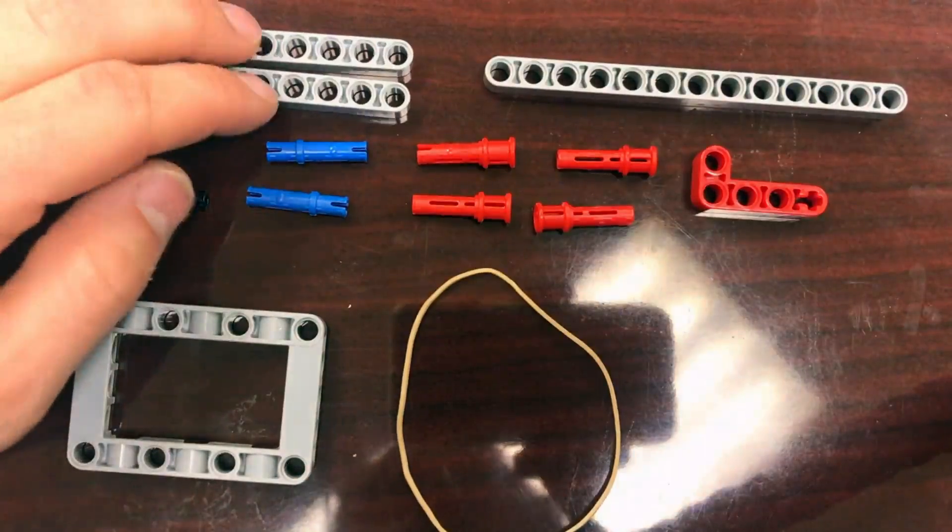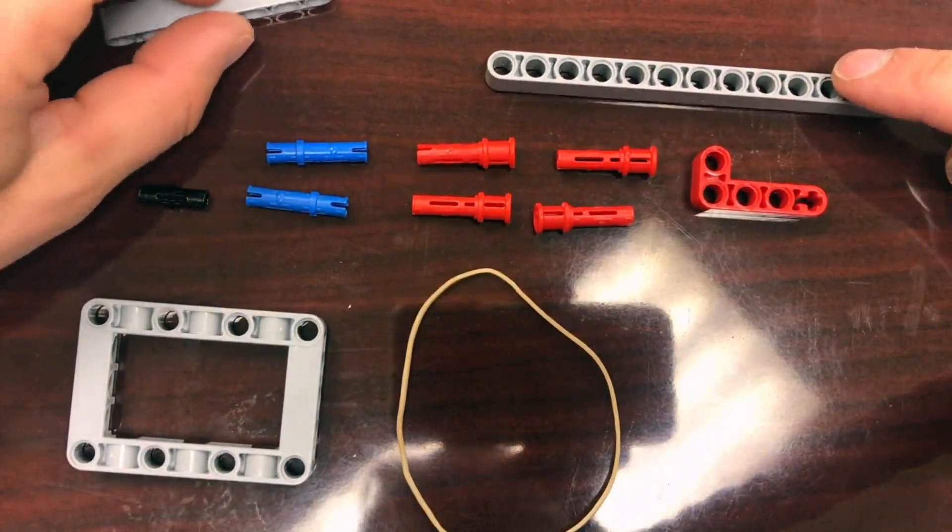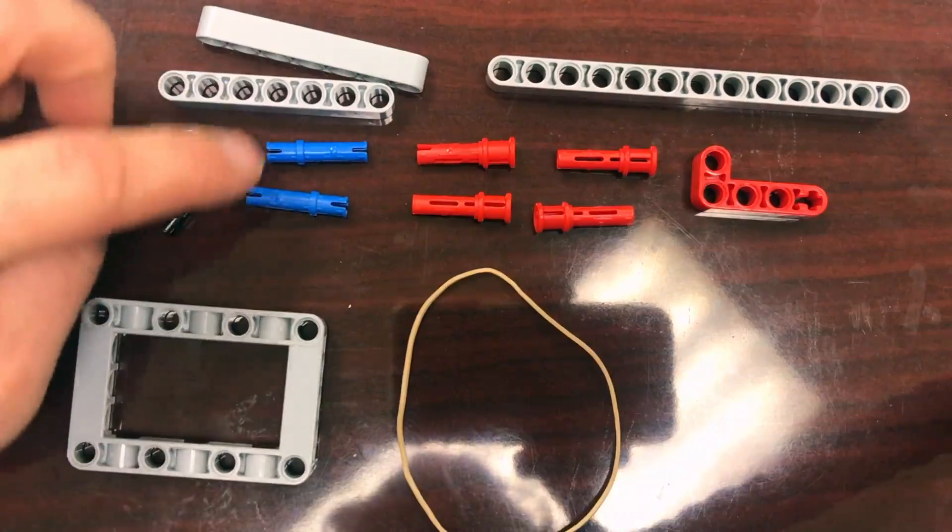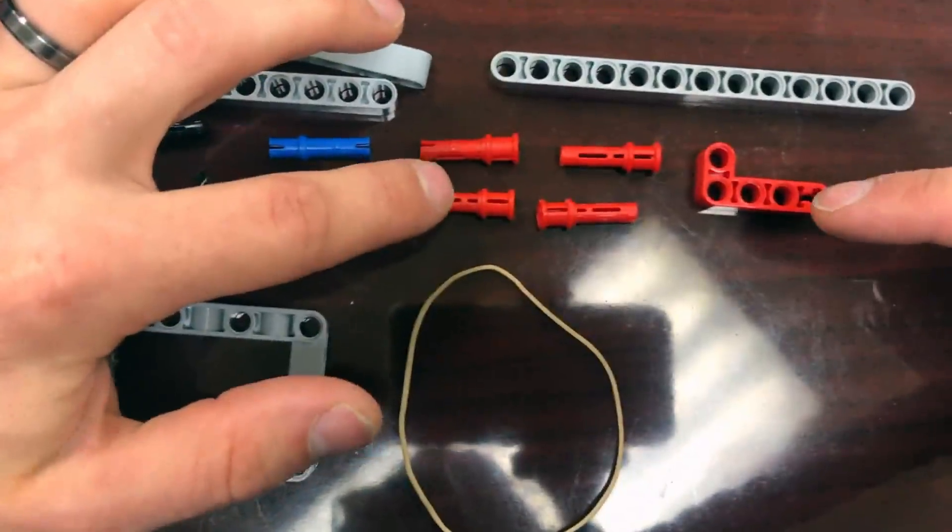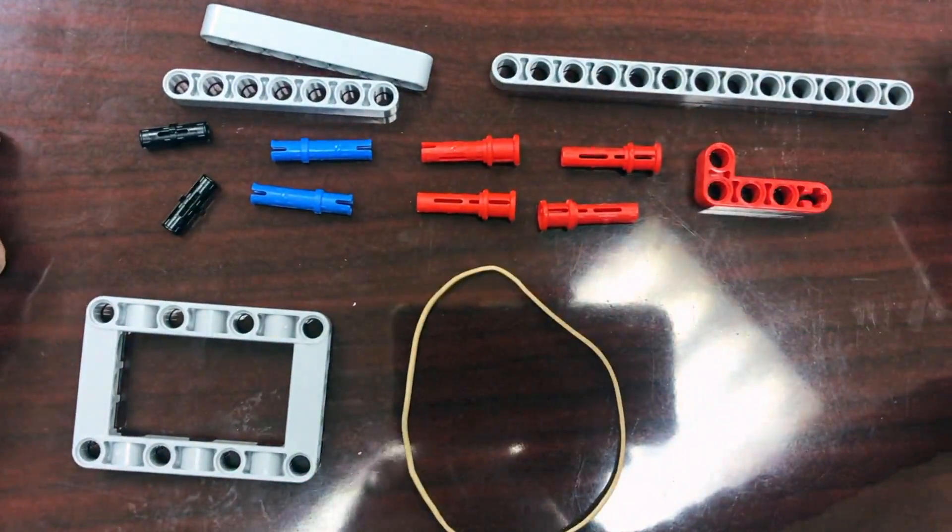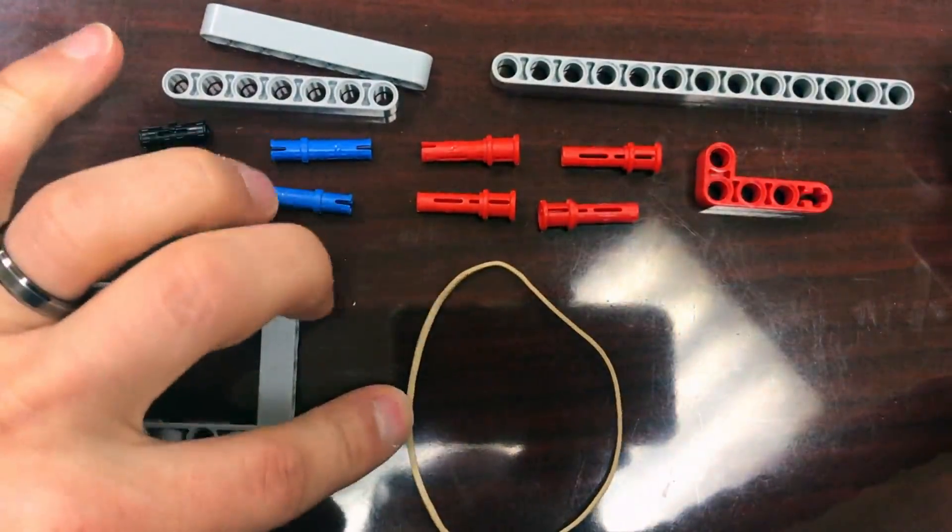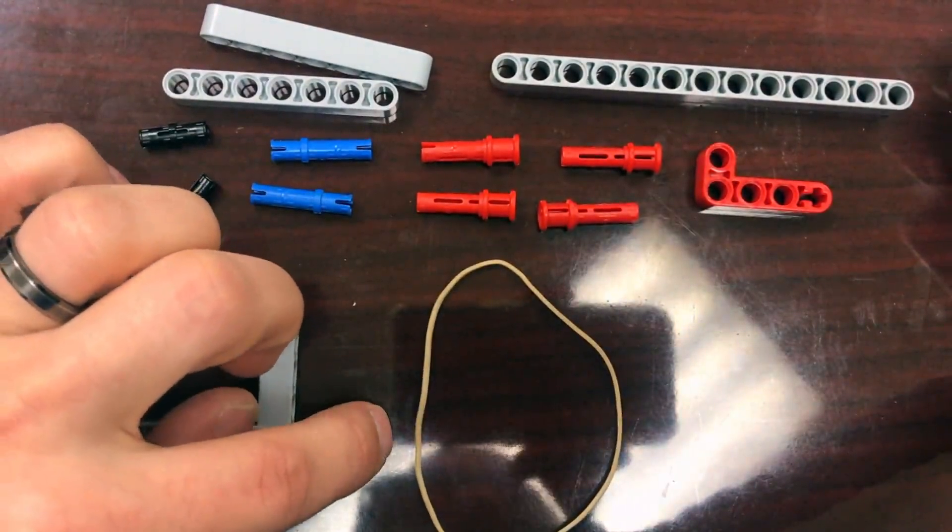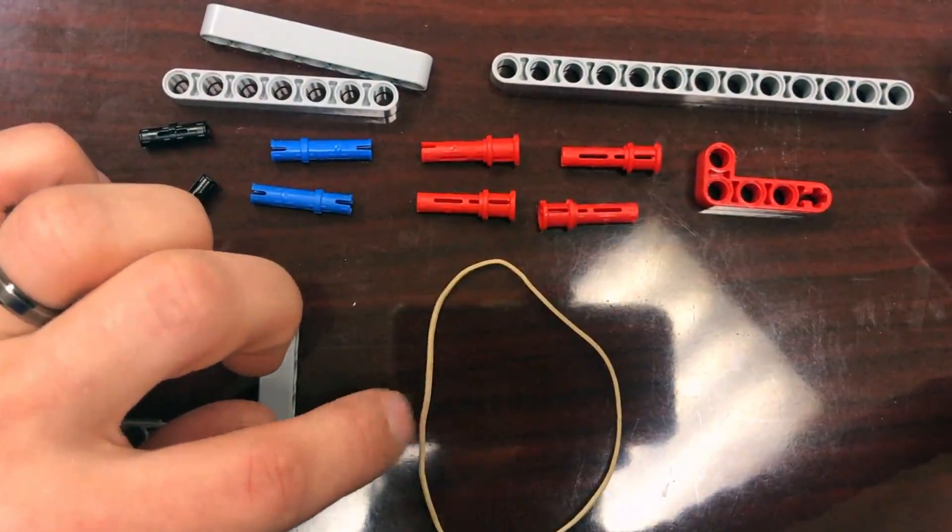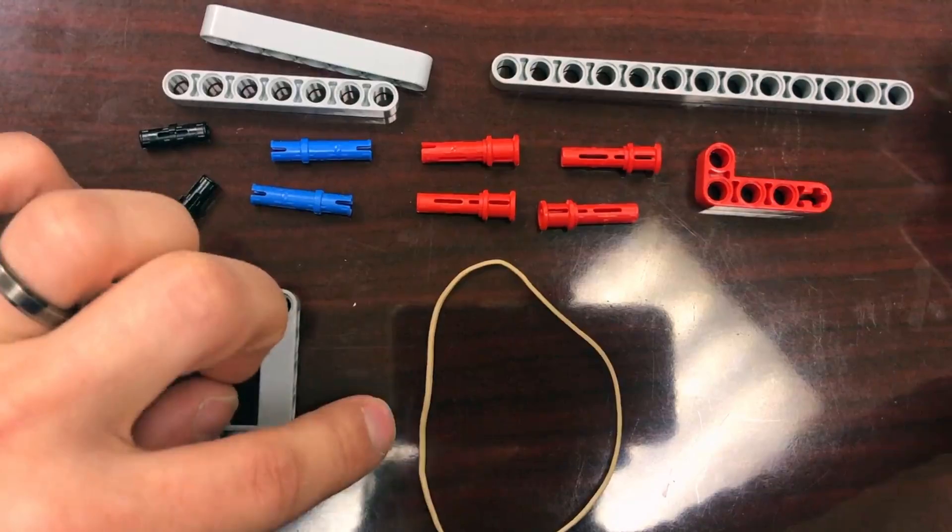We're going to need two 7 beams, one 13 beam, two black pegs, two blue pegs, four red pegs with the axle end on them, one 2x4 L beam, a picture frame, and a Lego band. This is not a regular rubber band, but a Lego band that comes in your EV3 kits.